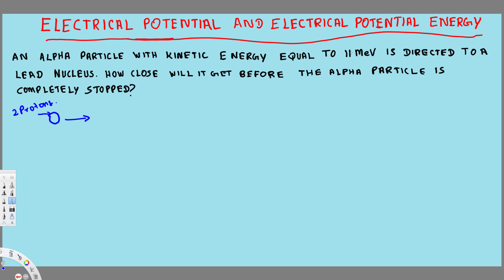They have provided the kinetic energy, so kinetic energy is equal to 11 million electron volts. The nucleus is lead (Pb), and Pb has 82 protons. The alpha particle is directed toward the lead nucleus.